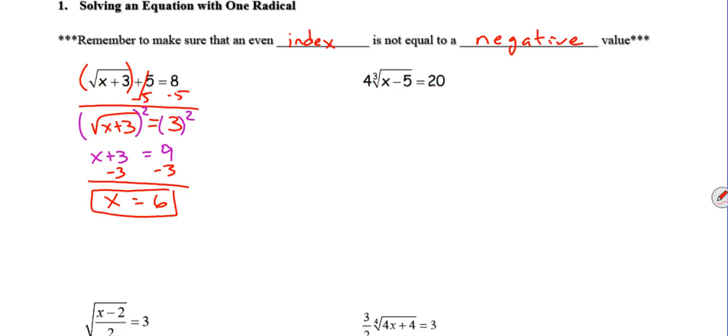Now it's generally a good idea to check for extraneous solutions. Most cases you're not going to have to worry about that as long as the only variable is underneath the radical. Let's move on to the second example here.